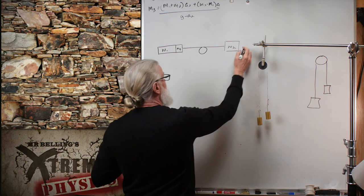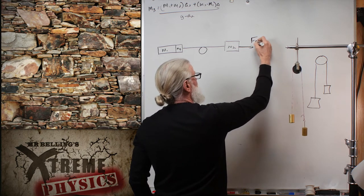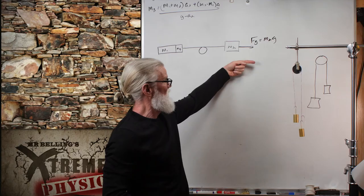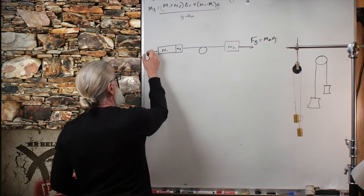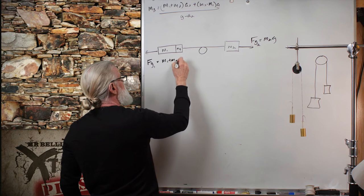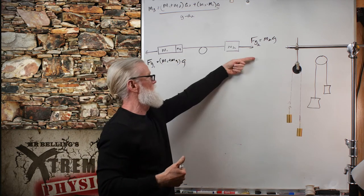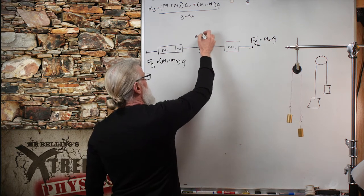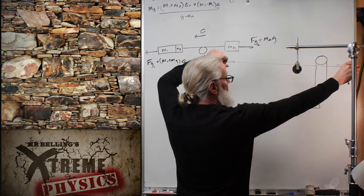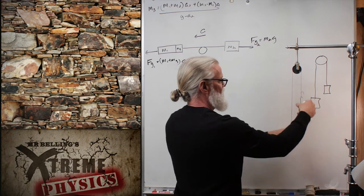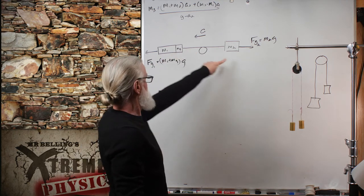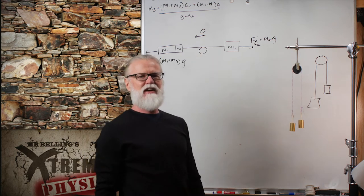In this horizontal view, the only forces are FG2 equals M2*g pulling one way, and FG1 equals (M1 plus M3)*g pulling the other way. This is going to accelerate in the direction of the larger force. There's only one acceleration in this case because they're all moving in the same direction. We have three masses, a massless string, and a massless frictionless pulley. That's it.